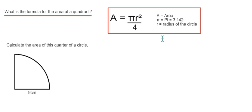So let's have a look at a quick example. We have a quarter of a circle. We need to find its area, so the radius is this number here which is 9.